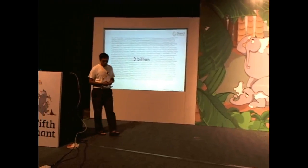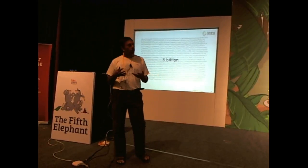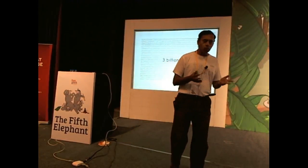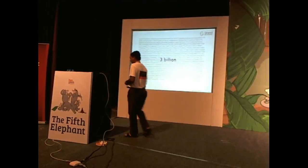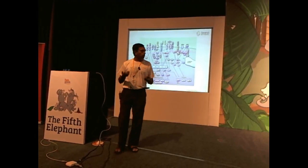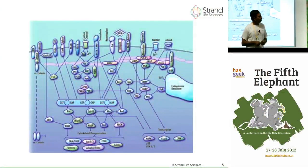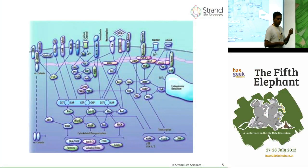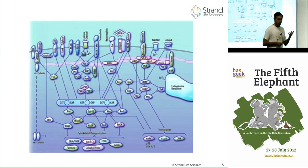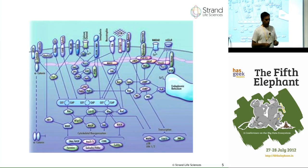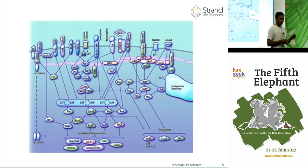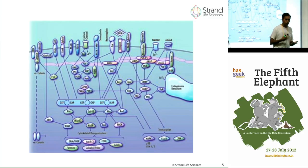If there is a program that every one of these cells executes, let's think about what its variables are. The variables happen to be molecules — literally hundreds of thousands of molecules that sit inside each cell. The level or amount of each molecule is the variable value: how many copies of glucose, how many copies of ATP. That is the state of the program, and as the program evolves it changes the values of these variables.